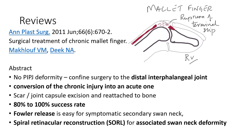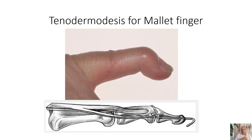There is a secondary deformity in mallet finger, which is a swan neck deformity. In a chronic and less demanding patient, a simple procedure like a Fowler tenotomy - which excises the central slip to reduce the force acting on the middle phalanx and producing the hyperextension - can be used. A better reconstructive procedure for a swan neck that is functionally disabling with snapping would be to do a SORL procedure using a spiral retinacular reconstruction. We'll look at the anatomical basis for that.